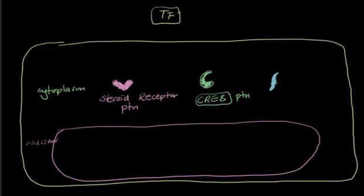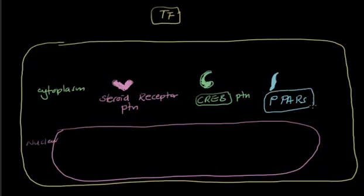And let's add a third protein: peroxisome proliferating activating receptors, or PPAR. So far you have three types of proteins, and these are basically the most important types you need to know.